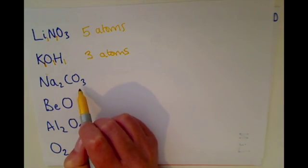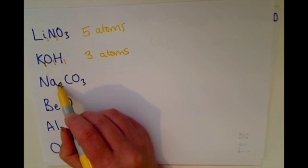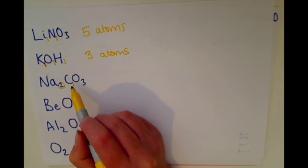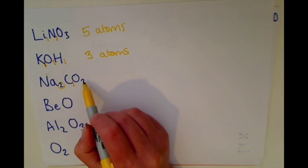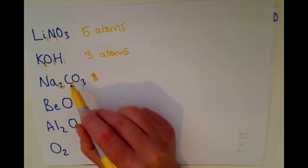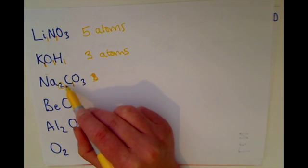Sodium carbonate, there are two atoms of sodium, one atom of carbon, and three atoms of oxygen. There are three plus one plus two, which makes six atoms in that compound.